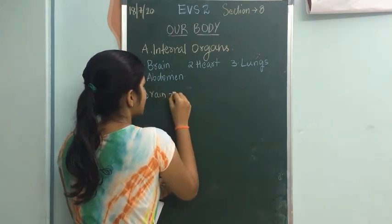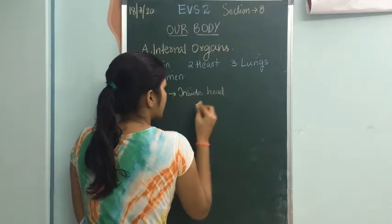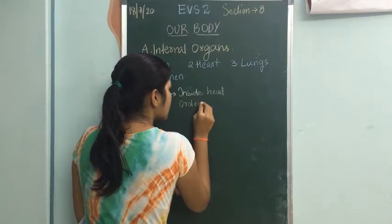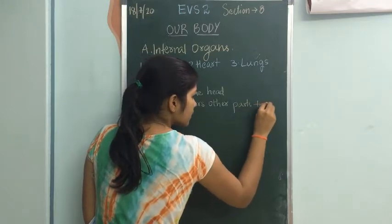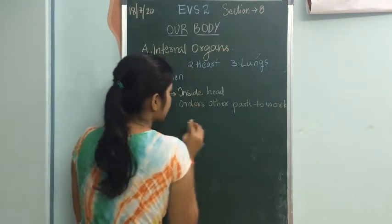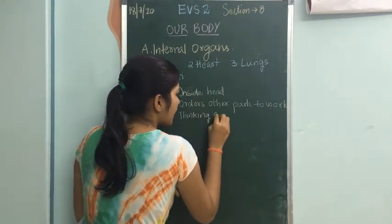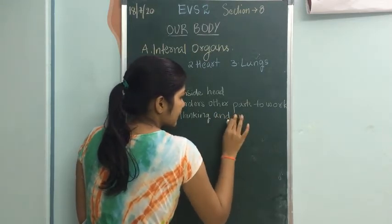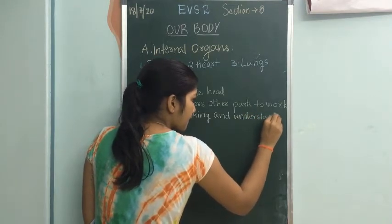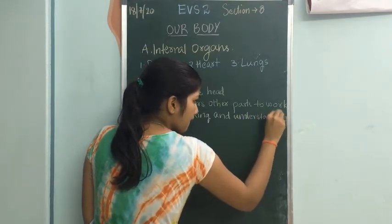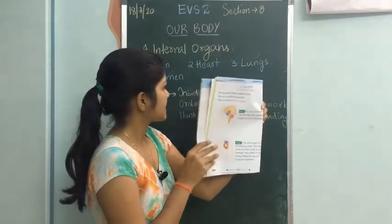So to summarize about the brain: the brain is present inside the head, it orders other parts to work properly, and it helps in thinking and understanding.